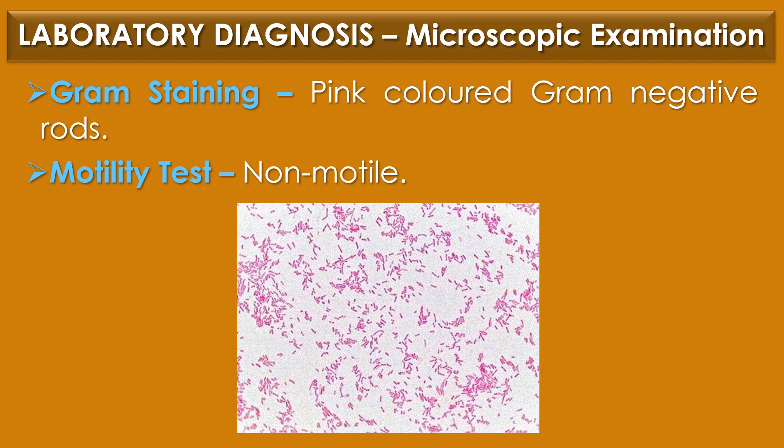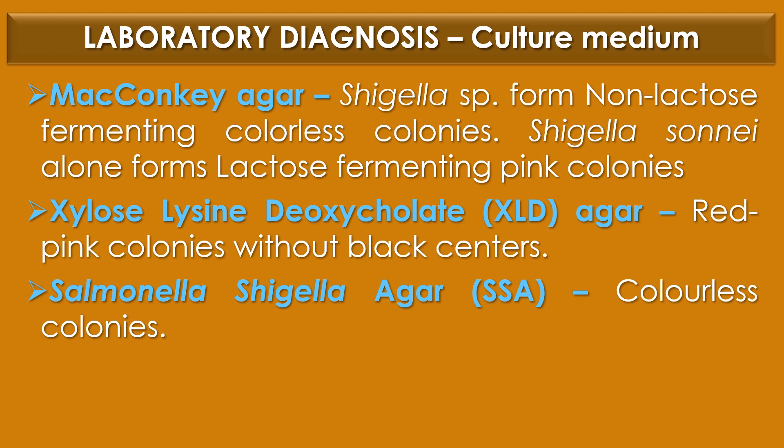Laboratory diagnosis of Shigella species. The first diagnostic method is microscopic examination. Under gram staining, Shigella species are observed as pink-colored gram-negative rods, and in the motility test, non-motile cells are observed. Regarding colony morphology and culture media: on MacConkey agar, Shigella species usually forms non-lactose fermenting colorless colonies, but Shigella sonnei alone forms pink-colored lactose-fermenting colonies. On XLD agar (Xylose Lysine Deoxycholate agar), Shigella species produce red-pink colonies without black centers. On Salmonella-Shigella agar, Shigella species produce colorless colonies.